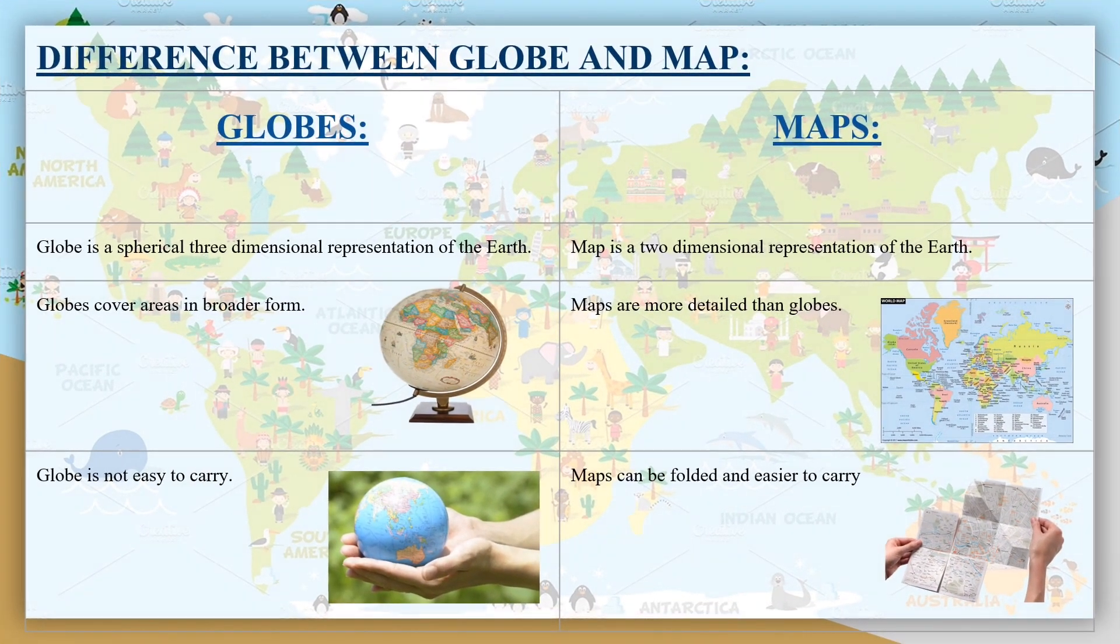Now come to the differences of globes and maps. Globe is a spherical three dimension representation of the earth. Map is two dimension representation of earth. Globes cover area in broader form. Maps are more details than globes. Globes are not easy to carry.